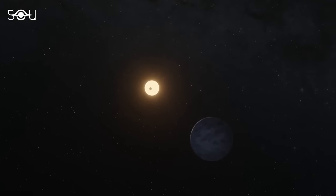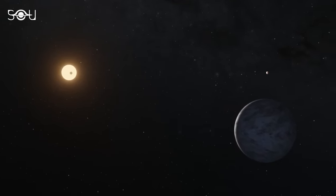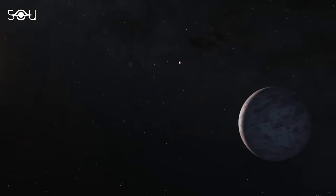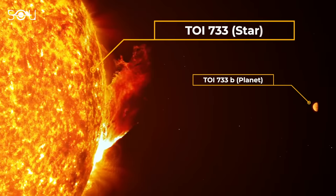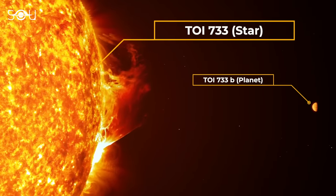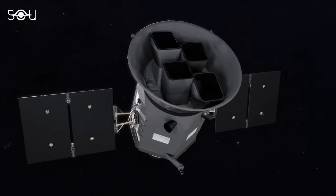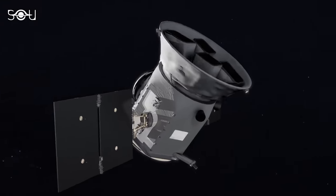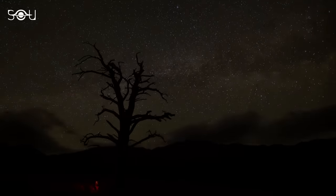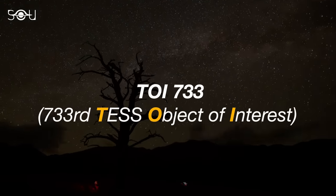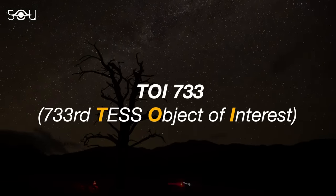TOI 733b is an exoplanet that lies around 245 light-years away from Earth in the Southern Celestial Hemisphere. It is orbiting TOI 733, a yellow star that contains almost 96% of the solar mass. The planet was first located in the data collected by TESS, the Transiting Exoplanet Survey Satellite. The name TOI 733 means that it is the 733rd TESS object of interest.